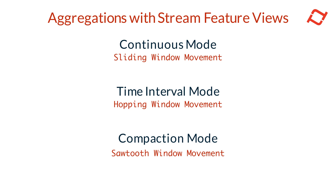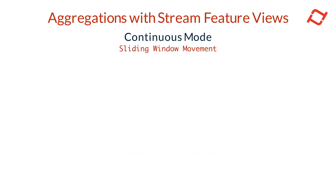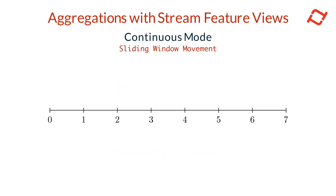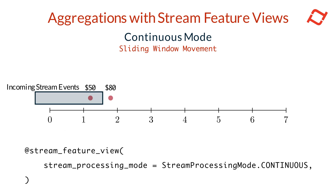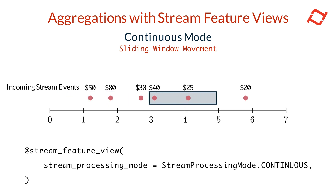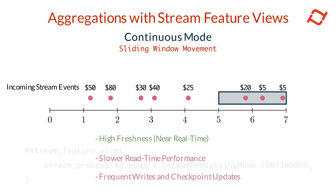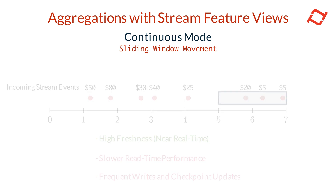There are three possible aggregation strategies for stream feature views: continuous mode with sliding window movement, time interval mode with hopping window movement, and compaction mode with sawtooth window movement. In continuous stream processing, data is processed in real time using a sliding window that moves forward with each incoming event. This mode ensures data is always up to date, but Tekton stores every transformed event in the online store and performs full aggregations at query time. Continuous mode has high freshness but read time performance can be slower since there are no precomputed tiles, and it can lead to higher infrastructure costs due to more frequent feature writes.